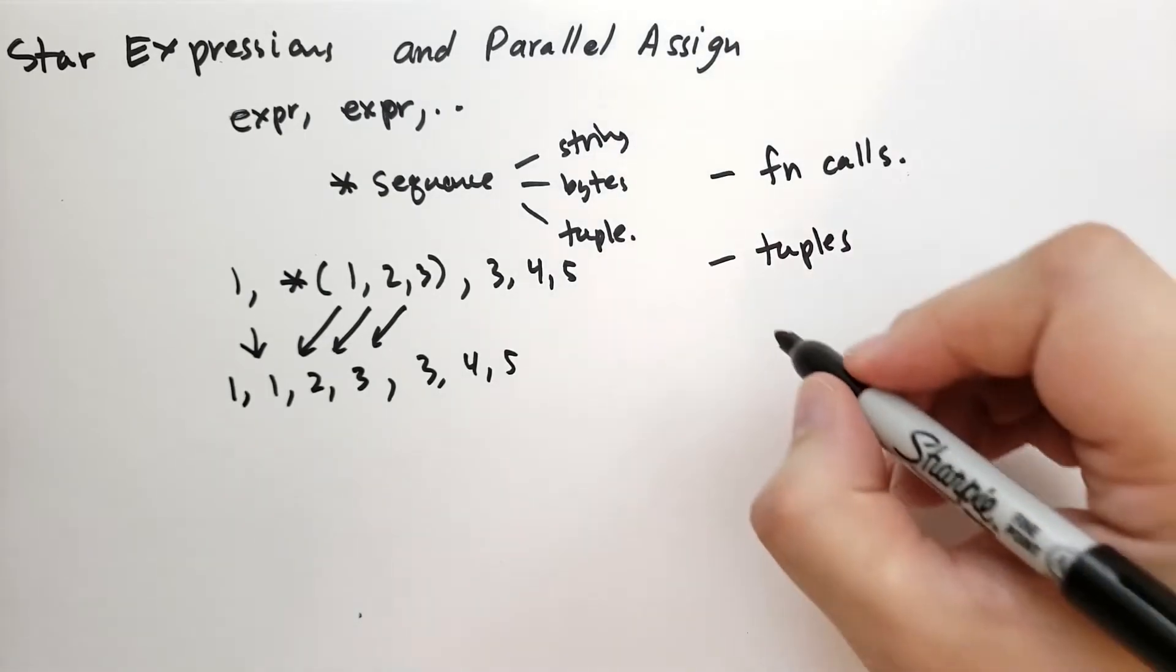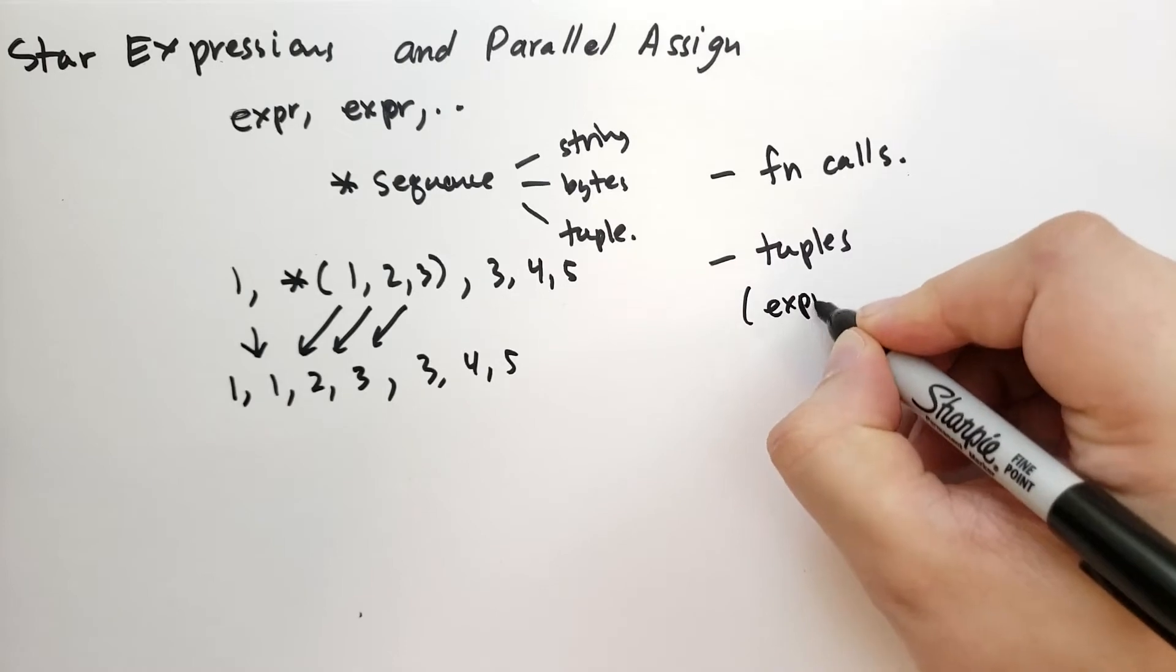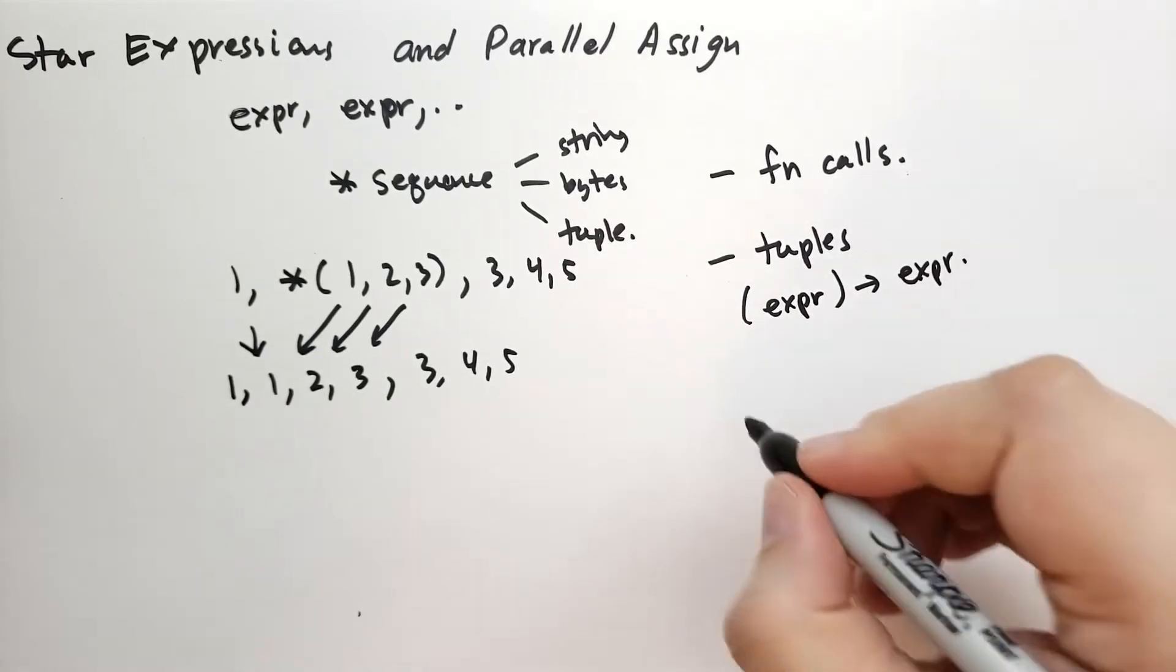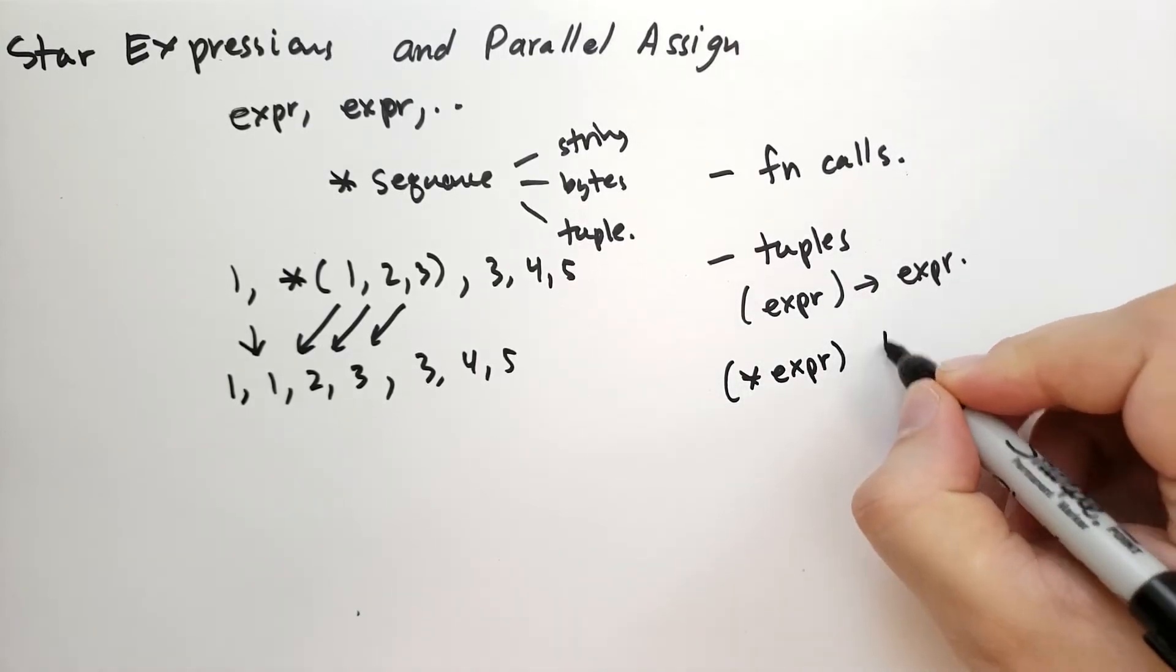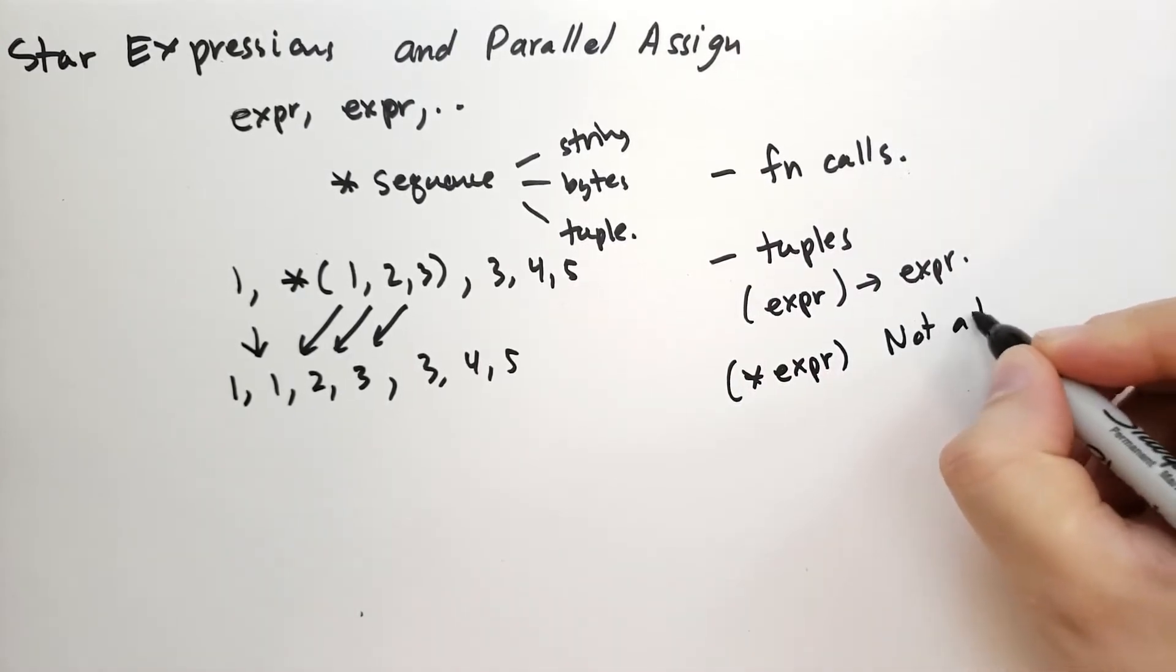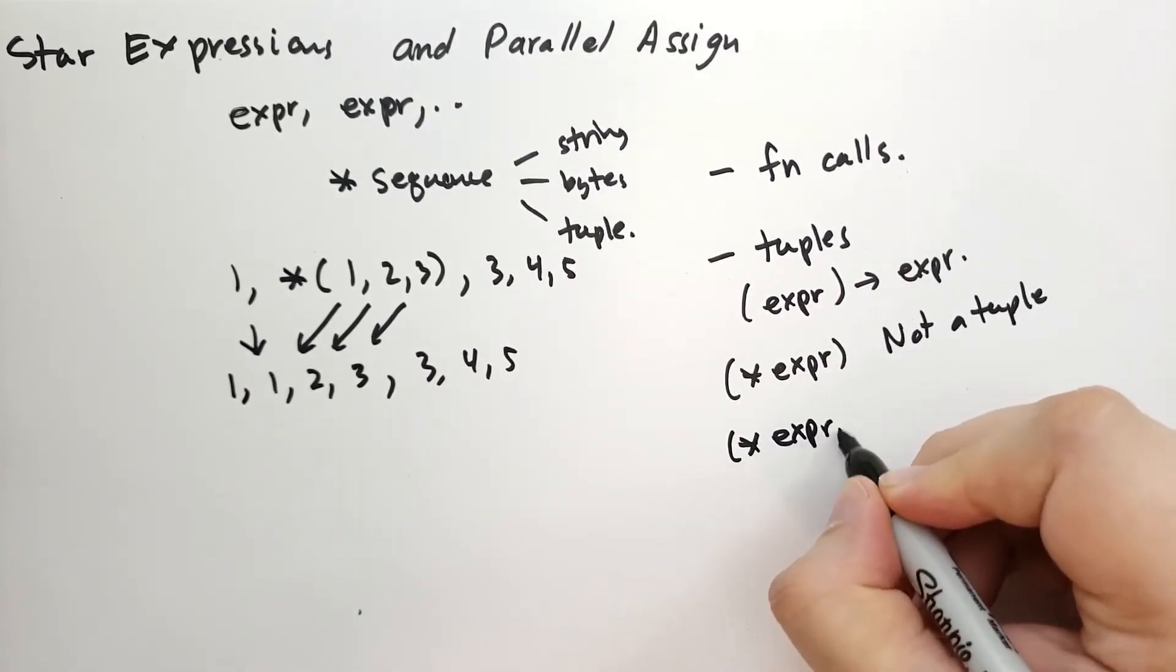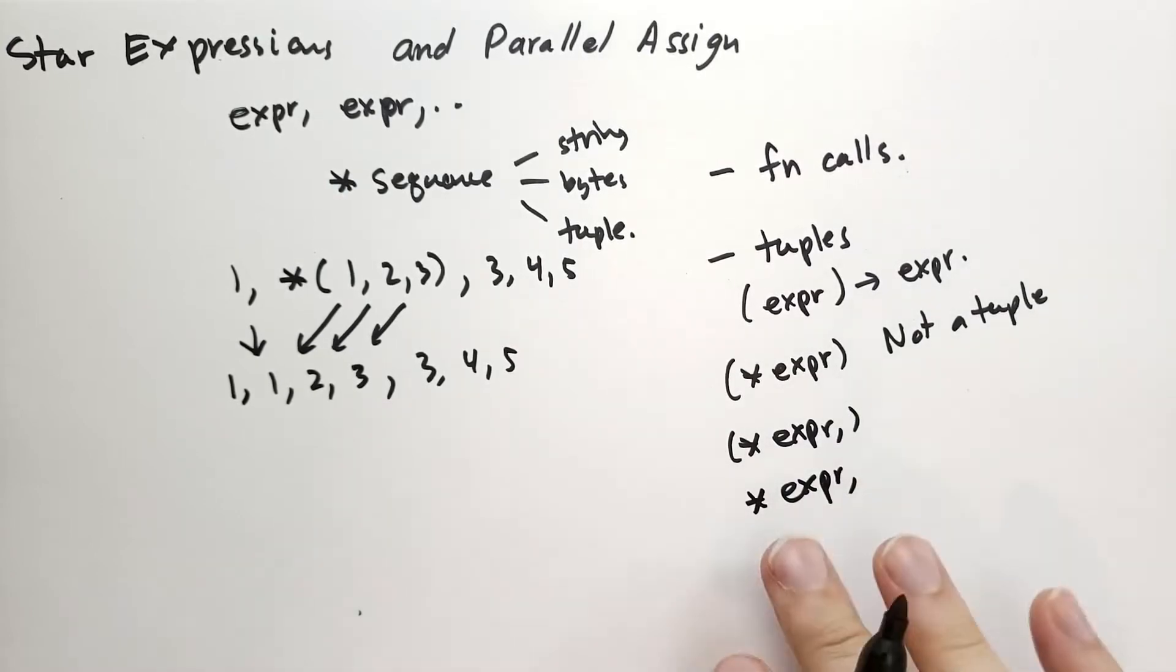Note that if you're doing it with, so if you're doing like (expr), this is just a regular expression, this is not a tuple. So if you tried to do star some expression, it's gonna say not tuple or not a sequence. So what you have to do is you have to do *expr, or *expr, to include this as a sequence in whatever you're doing.